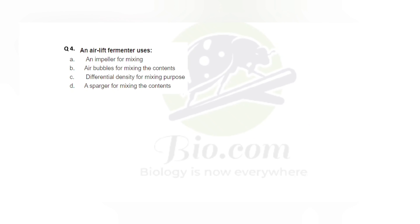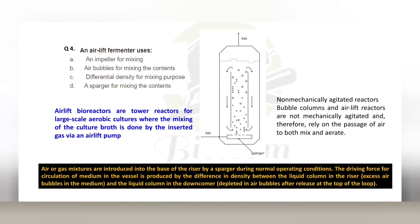Let's discuss one more question: what does an airlift fermenter use? Before answering, let's discuss what an airlift fermenter or airlift bioreactor is. Basically, an airlift bioreactor has a type of mechanical device installed for agitation and constant stirring. As we can see in continuous stirred tank reactors (CSTR), there are baffles, agitators, and impellers. But the airlift fermenter is what we call a non-mechanically agitated reactor.